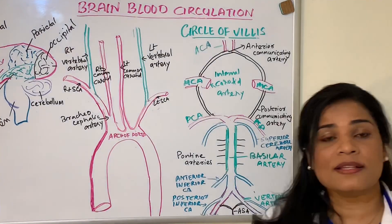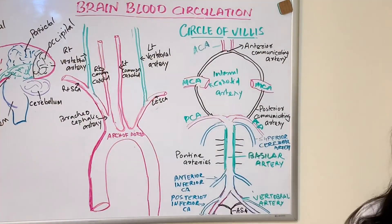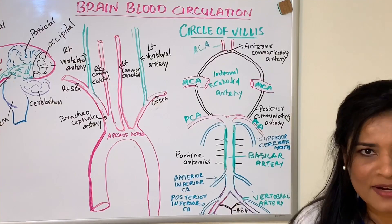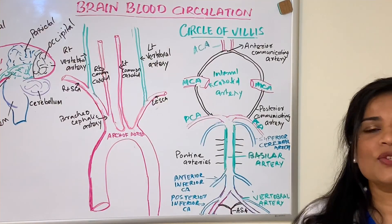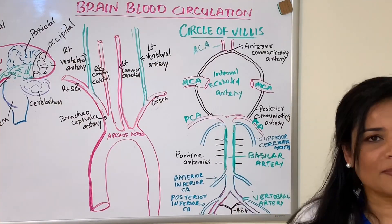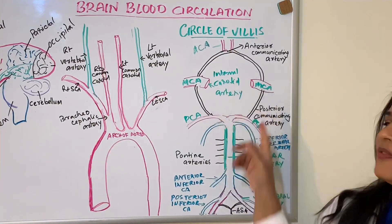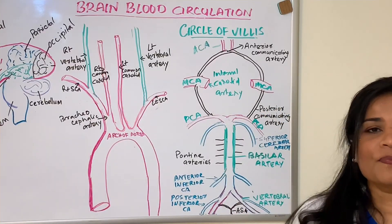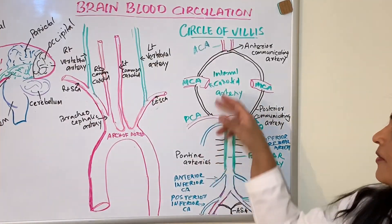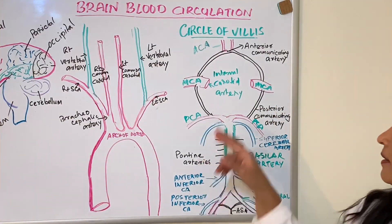The vertebral arteries arising from the two subclavian arteries on both sides unite to form a common artery known as the basilar artery. This basilar artery connects with the three major cerebral arteries, which are branches of the carotid artery, supplying different areas of the brain.